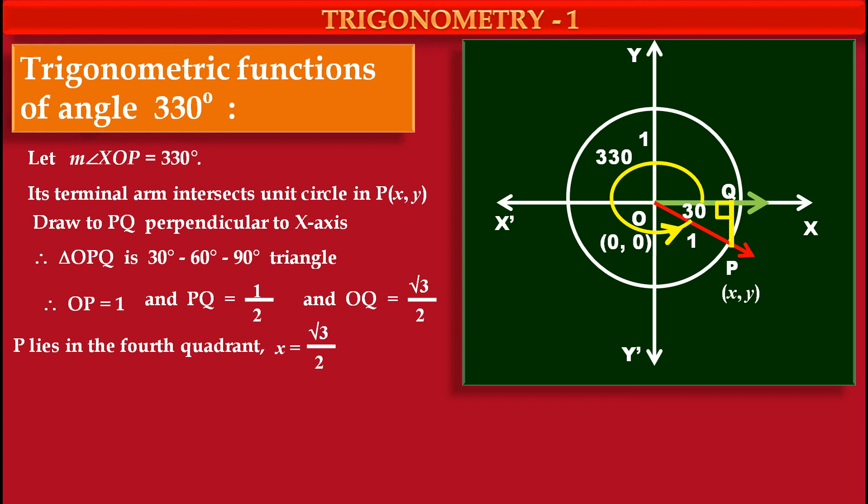And value of x coordinate is equal to distance OQ on x-axis. And distance OQ is root 3 upon 2. And that's why x is equal to plus root 3 upon 2.